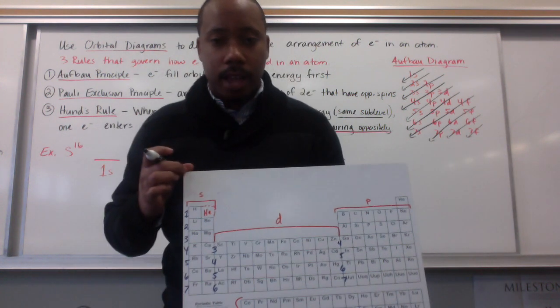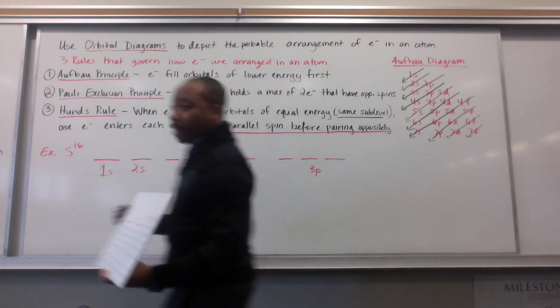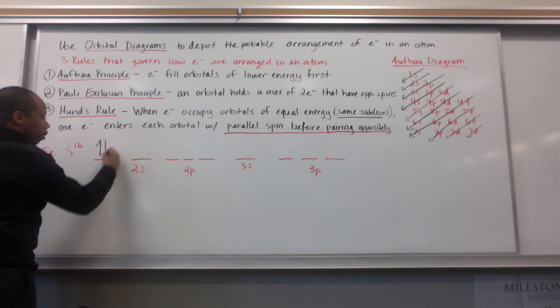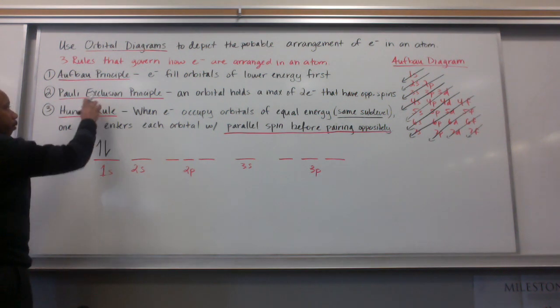So, let's do 1s. I represent my electrons with arrows. One arrow going up, one arrow going down. Follows the Pauli exclusion principle there.